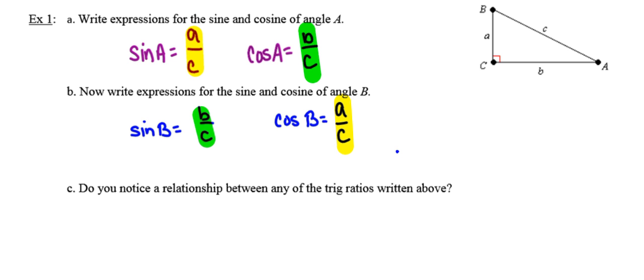So yes, we do notice a relationship. The sine of angle A is equivalent to the cosine of angle B, and likewise, the sine of angle B is equivalent to the cosine of angle A.